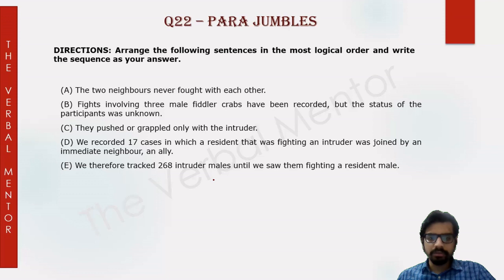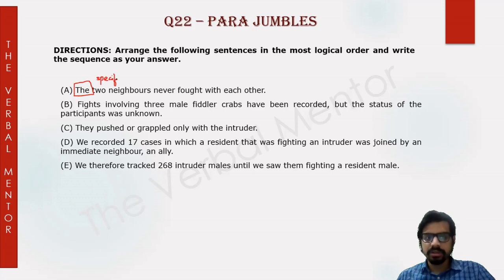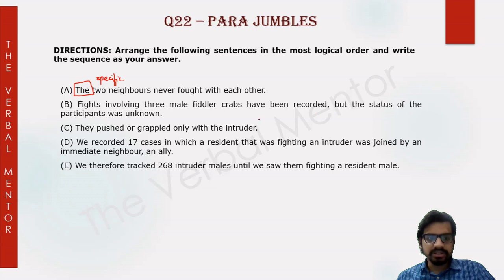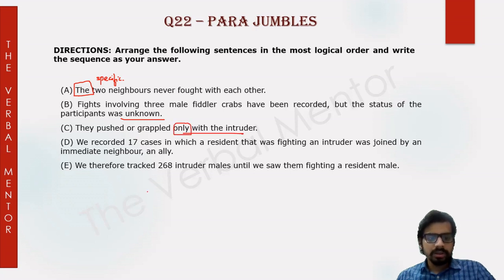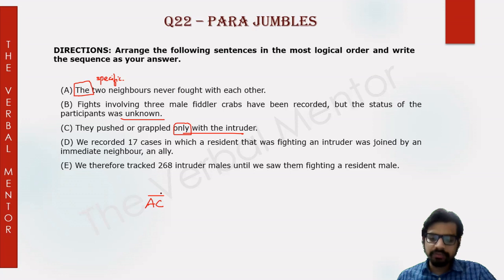Question 22 of the CAT Verbal Ability practice series. The sentence 'the two neighbors never fought with each other' uses 'the two neighbors,' implying a specific reference — there must be prior context. The sentence about fights involving three male fiddler crabs being recorded but the status of participants being unknown clearly connects with the neighbors sentence. They pushed or grappled only with the intruder — the person who intruded their neighborhood. So A and C form a concrete pair.